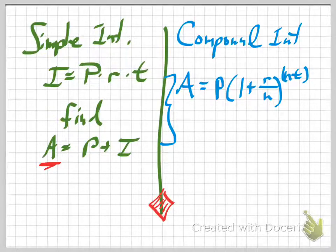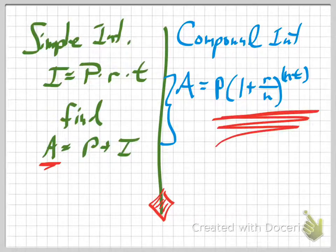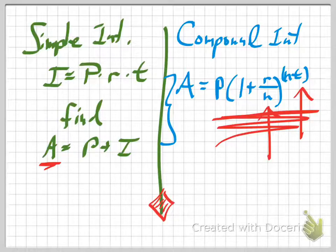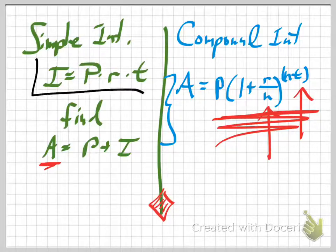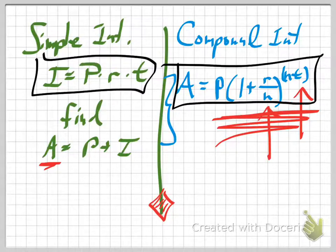That's it for compound and simple interest. This compound formula is a little different from the one in your book, but it lets you plug everything in at once. If it's not already in your book, write this compound formula in. Make sure you bring a calculator to class tomorrow and know these two formulas. A good quiz question might be: what do the different letters stand for? P is the principal, R is the interest rate as a decimal, T is the time in years, and N — which only appears in the compound formula — is the number of times per year that you compound.